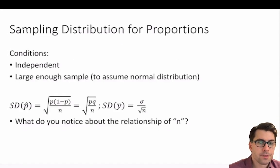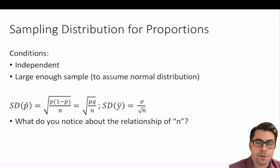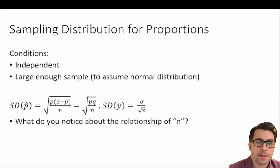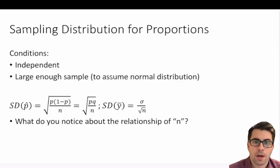When we're talking about our sampling distributions for our proportions, we need to be cognizant of a few things. Our observations must be independent of each other, and we must have a large enough sample to assume a normal distribution. We'll talk about that in a slide or two.